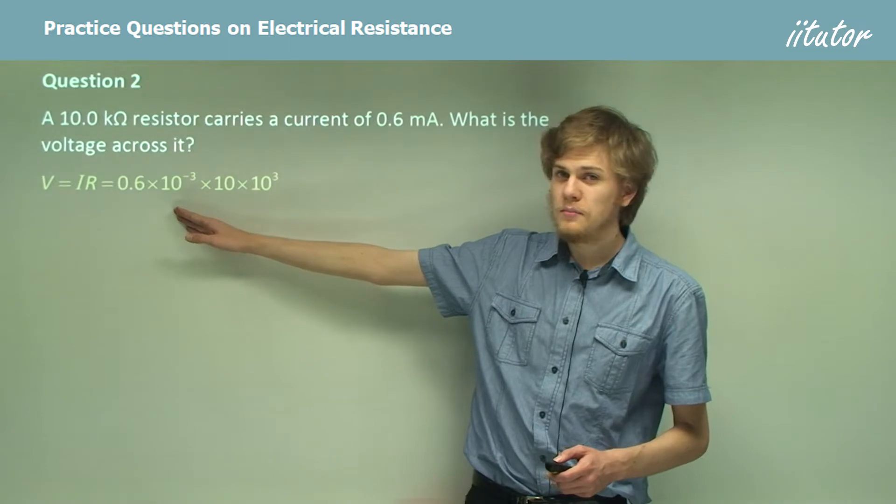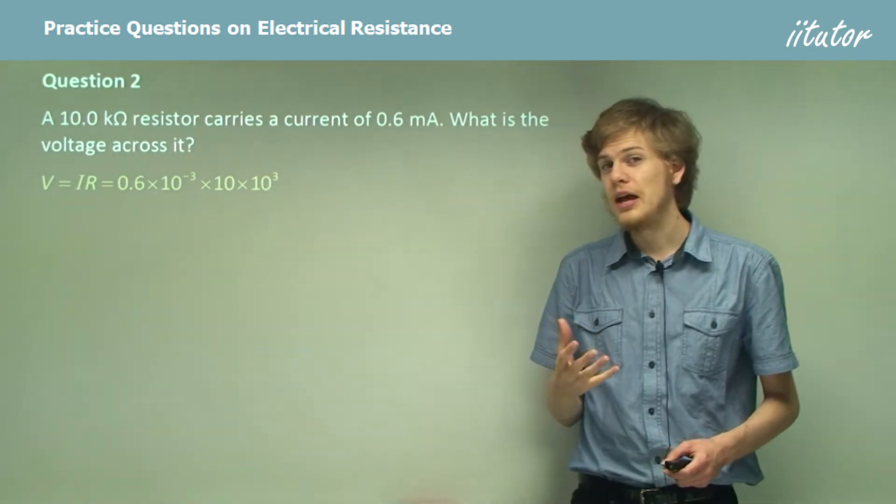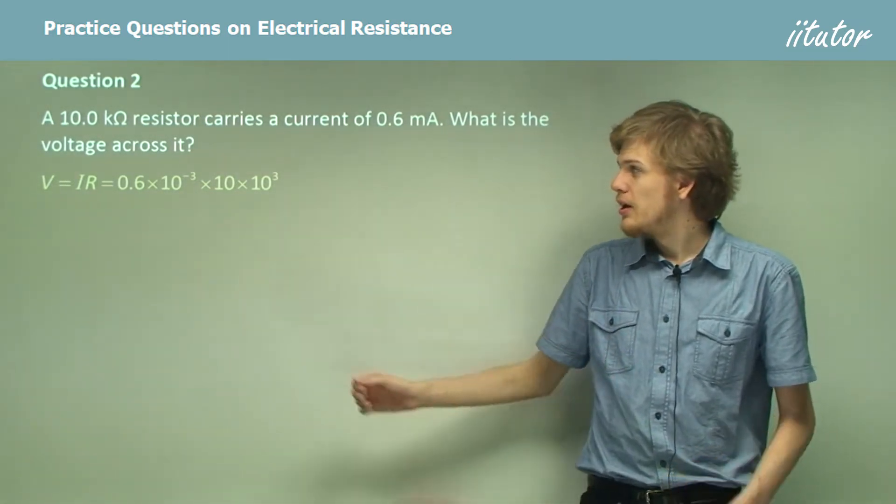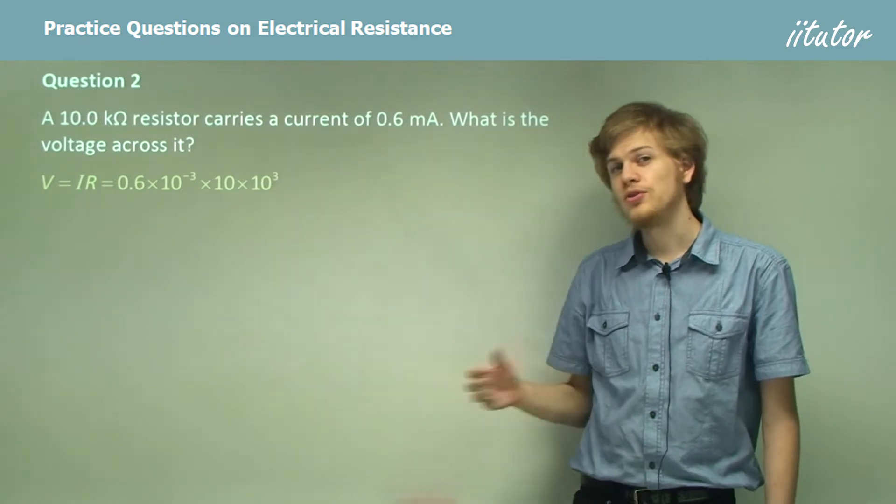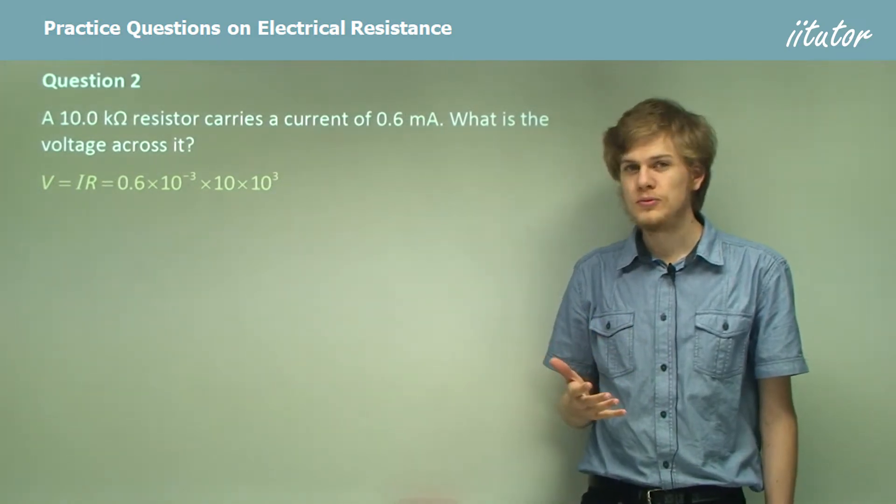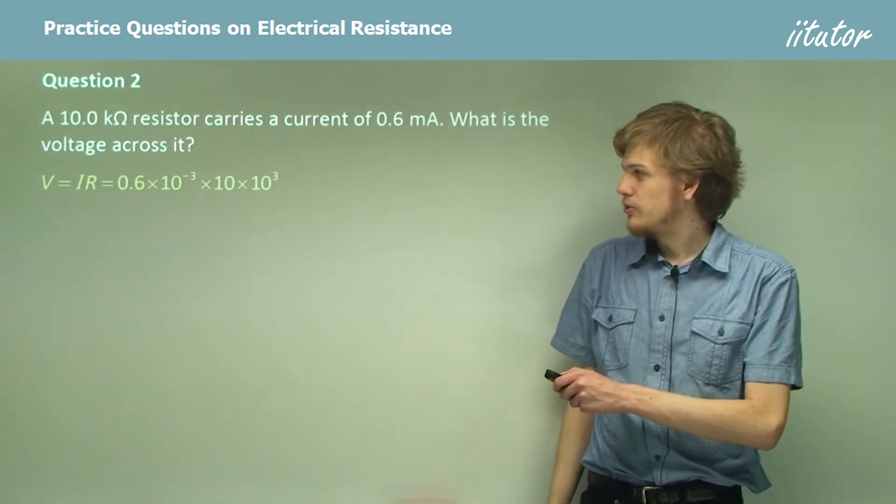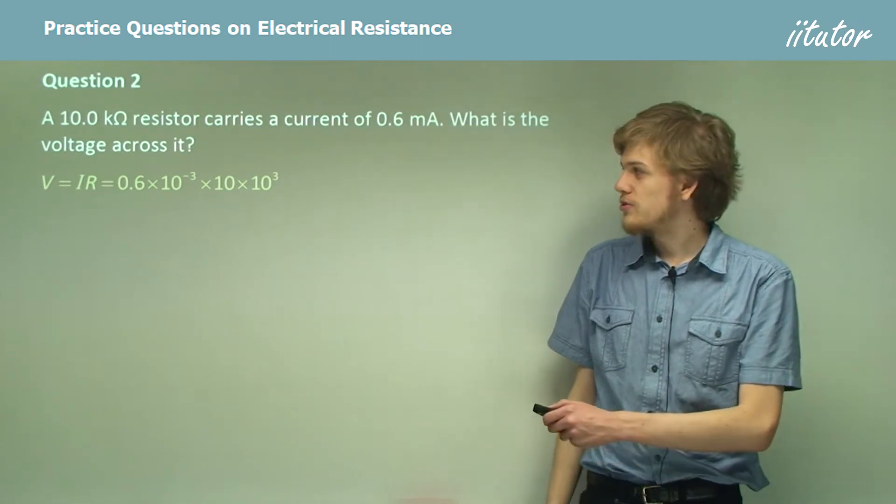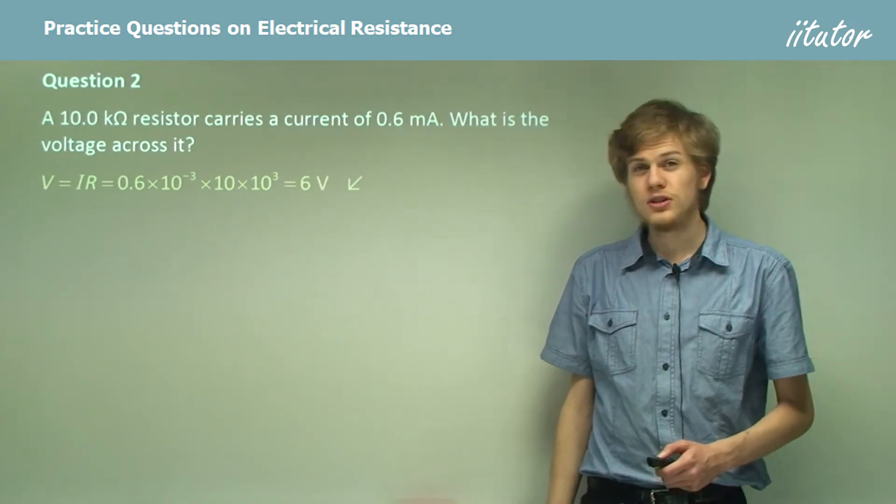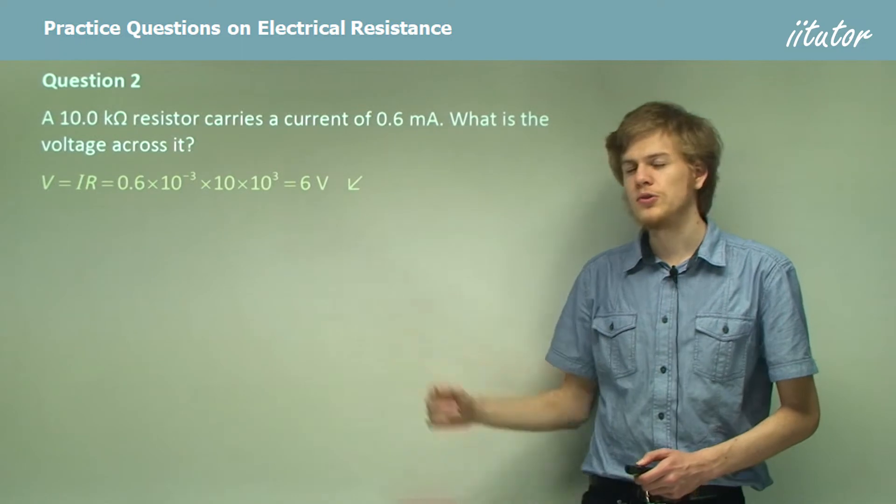So here's our milliamps. Remember that a milliamp is one thousandth of an amp. And here's our kilo ohms, because a kilo ohm is 1,000 ohms. So using a calculator to figure this out for us, we get an answer of 6 volts. So this is the drop across the resistor.